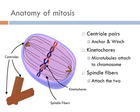Zooming out from a single chromosome to an entire cell, you see the cell encased in a cell membrane with a line of several chromosomes. Spindle fibers attach to the kinetochores of the sister chromatids in the middle of the cell. On the ends, those same spindle fibers connect to a structure called the centriole. There are always two centrioles in each cell, one for each side, referred to as centriole pairs. These centriole pairs serve as an anchoring point on the cell membrane, and also act as a winch, pulling the spindle fibers closer and closer towards them, serving to separate the sister chromatids from one another.